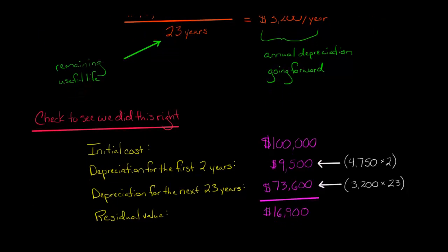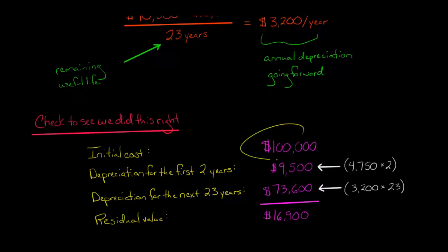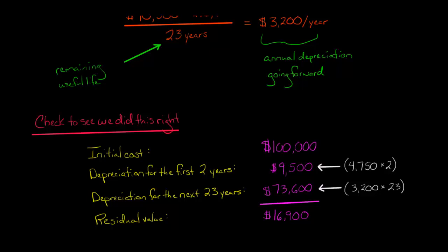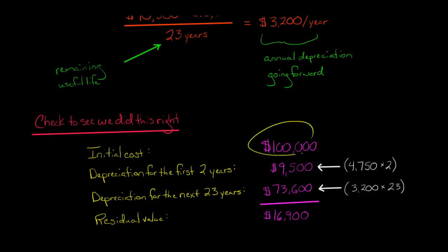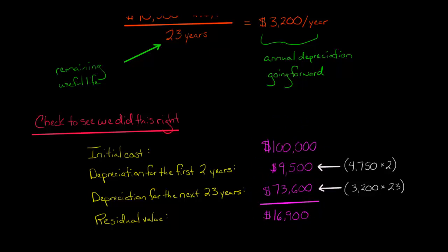Let's check to see that we did this right. The initial cost of the asset was $100,000. They took $9,500 of depreciation for the first two years before the revised figures. Then for the next 23 years, they are projected to take $73,600 of total depreciation — that's $3,200 a year times 23 remaining years. So if you take $100,000 minus $9,500 minus $73,600, you get $16,900, which is the residual value. That's the figure we're supposed to get, because we depreciate the asset down to its residual value, not to zero.